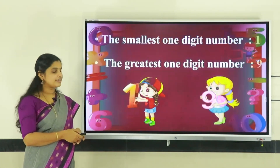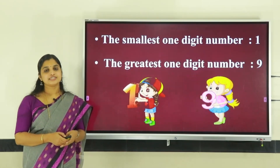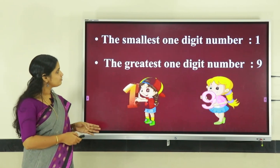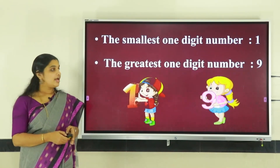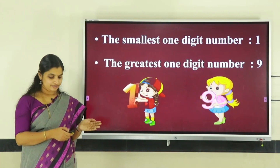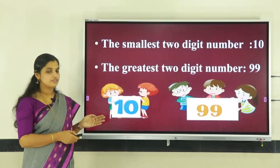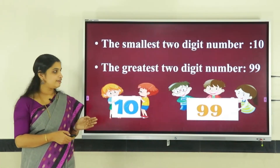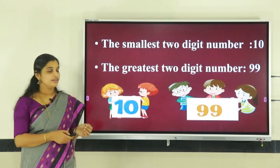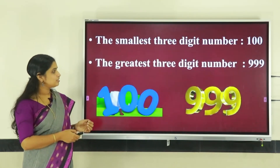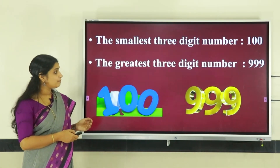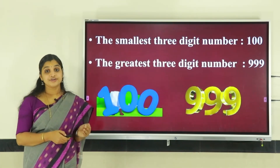Before I begin, let me remind you a few things that you have already learnt in your lower classes. The smallest one-digit number is one and the greatest one-digit number is nine. The smallest two-digit number is ten and the greatest two-digit number is ninety-nine. The smallest three-digit number is hundred and the greatest three-digit number is nine hundred ninety-nine.